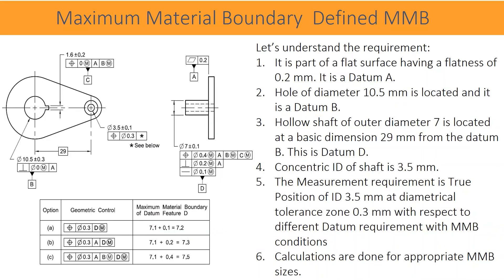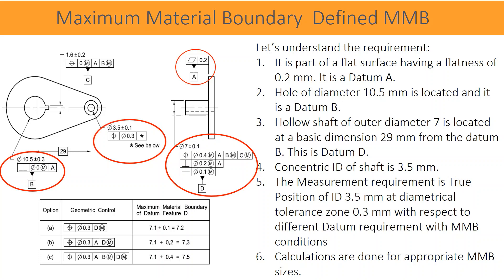Calculating MMB size with respect to datum precedence — let's understand the requirement. It is a part with a flat surface having a flatness of 0.2 millimeters; it is datum A. A hole of diameter 10.5 millimeters is located and it is datum B. A hollow shaft of outer diameter 7 is located at a basic dimension of 29 millimeters from datum B — this is datum D. The concentric ID of the shaft is 3.5 millimeters. The measurement requirement is true position of ID 3.5 millimeters at a diametrical tolerance zone of 0.3 millimeters with respect to different datum requirements with MMB conditions; calculations are done for appropriate MMB sizes.